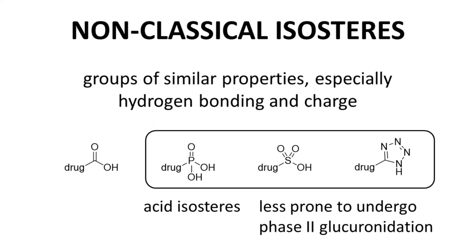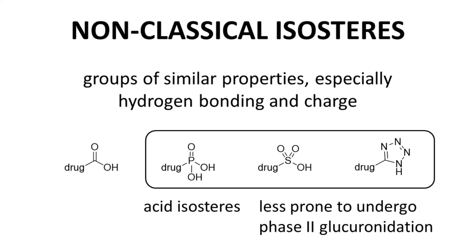Non-classical isosteres are less easy to categorize because they sometimes do not look very similar. On the screen is a drug with a carboxylic acid. Some possible bio-isosteres for a carboxylic acid include a phosphonic acid, sulfonic acid, and a tetrazole ring. All of these, including the tetrazole, are over 99% deprotonated as anions at physiological pH. Carboxylic acids sometimes undergo rapid phase II conjugations, especially glucuronidations. These isosteres preserve the properties of the original acid and are less prone to undergo glucuronidation.